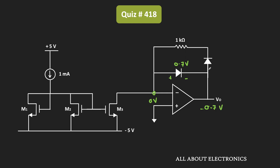If the output voltage is 0.7V, then D2 should remain off, because the anode of D2 is at 0.7V while this node is at 0V. If D2 is off, the entire current should flow through D1 in the forward direction. However, the current through MOSFET M3 is 0.5 mA flowing in a certain direction, while the diode current would flow in the opposite direction. Therefore, KCL at this node cannot be satisfied, meaning the current through D1 would need to be negative — so D1 will remain off.